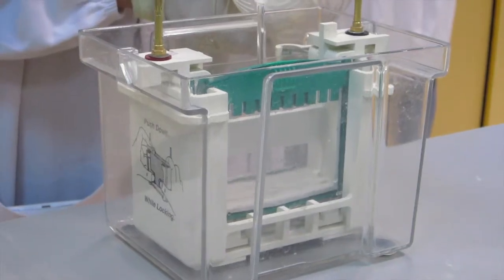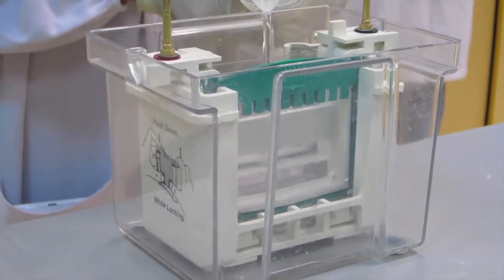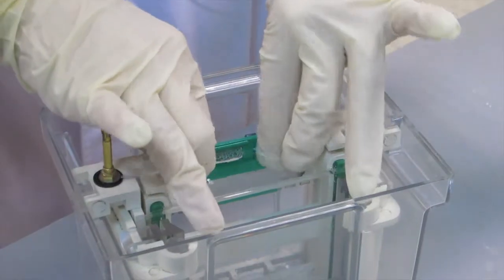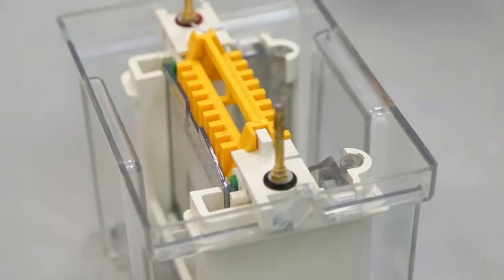Fill the upper buffer chamber of the mini-tank with the electrophoresis buffer prepared earlier till the brim, and then substitute the comb on the ready-gel cassette with a loading guide.